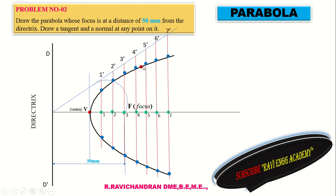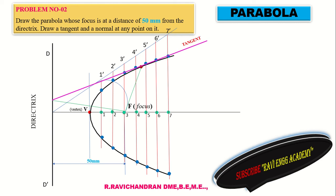To draw the tangent at any point on the parabola, select a point on the curve and draw a line through it. Drop a line from that point - this line is perpendicular at 90 degrees. The 90-degree line is the normal. The tangent is drawn perpendicular to the normal at that same point, giving you both the tangent and the normal at the chosen point.